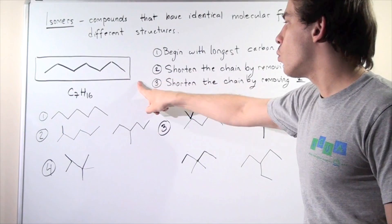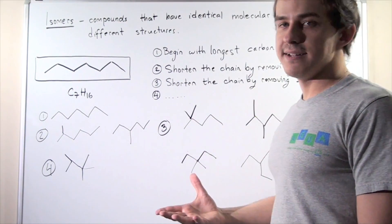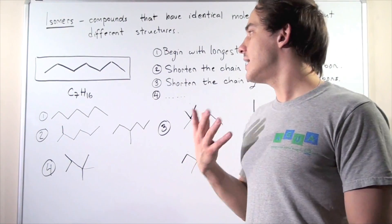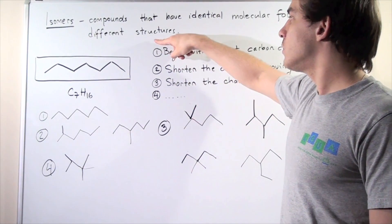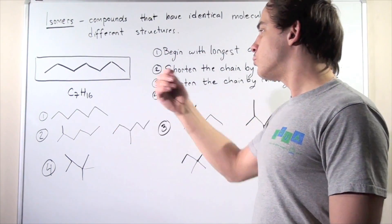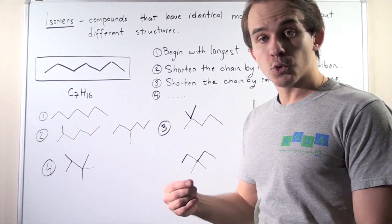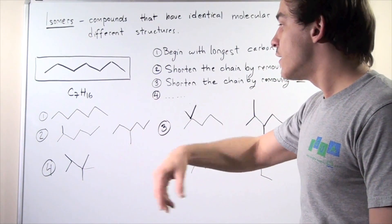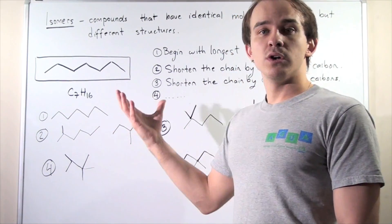So once again, these steps work for any alkanes. Whenever you're trying to find the isomers of alkanes, you follow these steps. You begin with the longest possible carbon chain, and then you keep removing a carbon atom, a methyl group, and reattaching it, forming our new isomers.